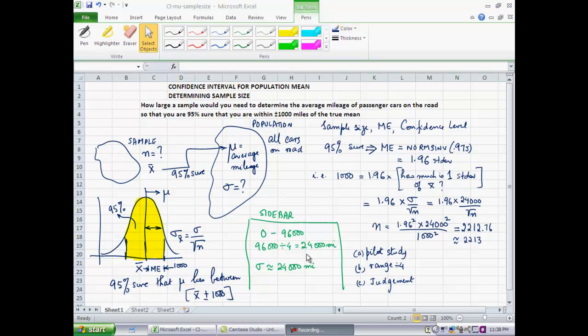Remember, the empirical rule says that for the normal distribution, roughly 68% of values lie within one standard deviation. Half of 68% is 34%. So as an approximation, we take the range, divide it up into four buckets, your four quartiles. And one of those buckets, the 24,000 miles, is an approximation of what that sigma is.